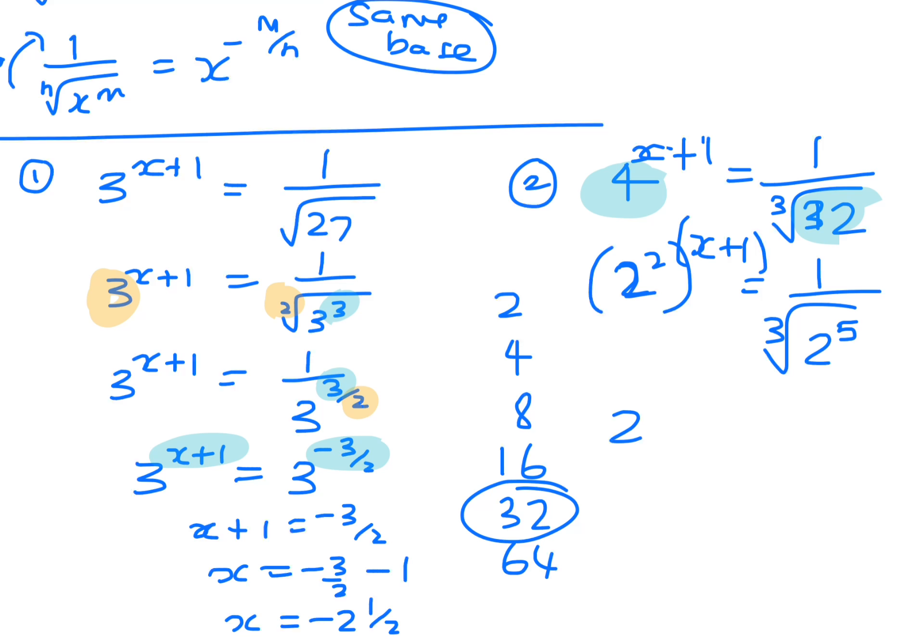So that will be 2 to that. Multiply the indices, so that's 2x plus 2, because that's using this rule. Remember when you have a bracket you multiply the indices. And this one here is 1 over 2 to the power of 5 on 3, because on the floor will be at the door. Bring it up to the top, so 2 to the 2x plus 2 is 2 to the minus 5 on 3.